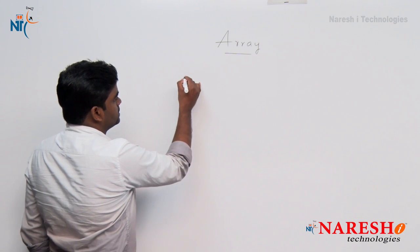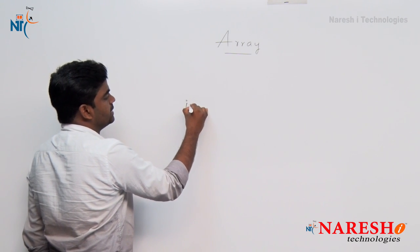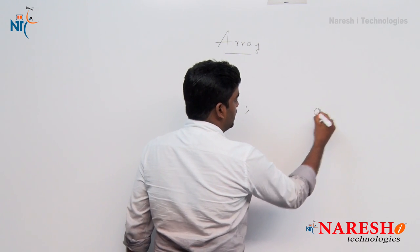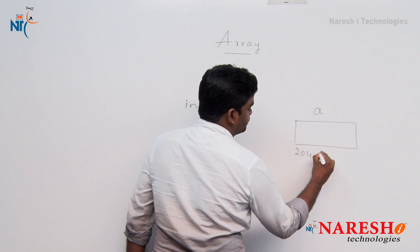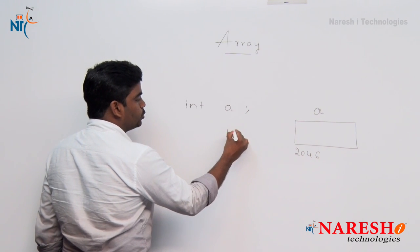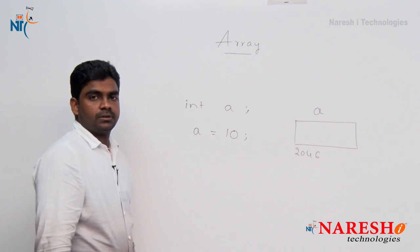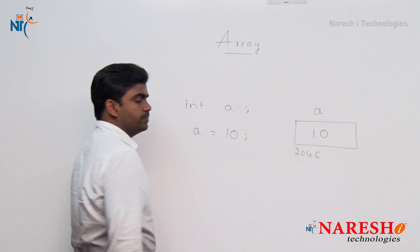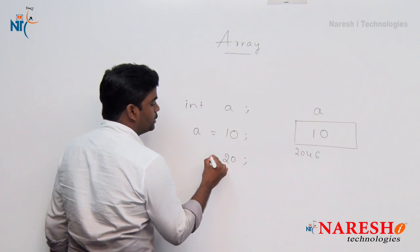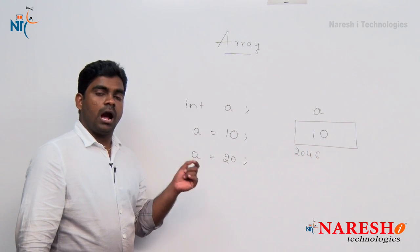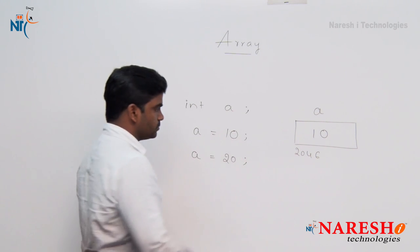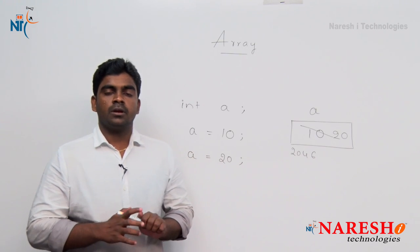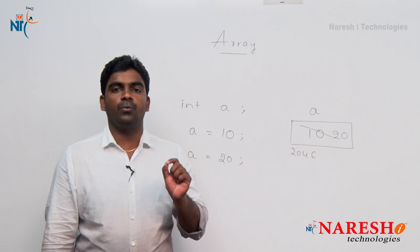Consider a primitive data type variable, integer a. This is a primitive variable declaration — a gets memory allocation somewhere, and next we are assigning one value to a, for example 10. The value 10 will be stored into a. If we try to store another value 20 into a, we can, but that will replace the existing value — 10 is replaced with the new value 20. Using one primitive variable, we can store only one value at a time.